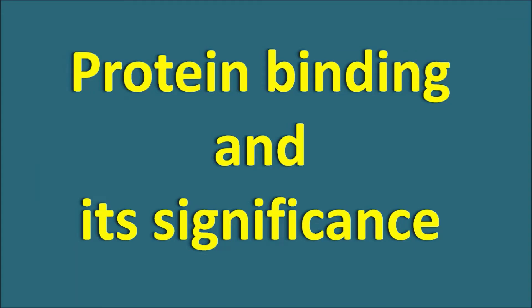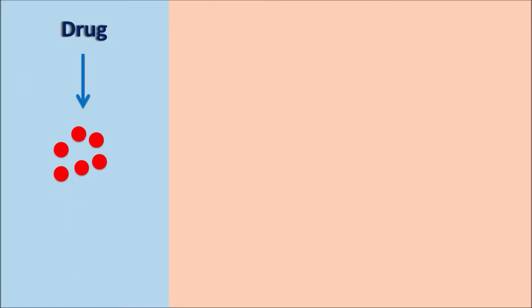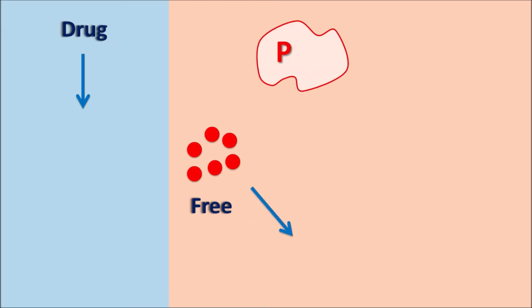Hi everyone. Today in this video let us discuss about protein binding and its significance. Whenever a drug is administered into the body, the drug molecules are present in the GI tract and they are absorbed along the GI tract into the systemic circulation, where the drug may be present as a free form. This drug can bind to the proteins, or otherwise it can undergo metabolism.